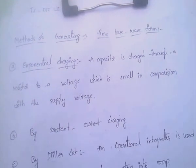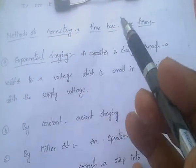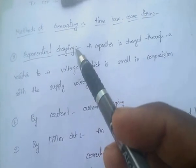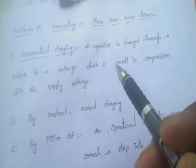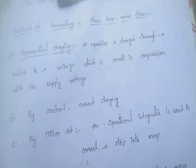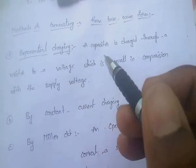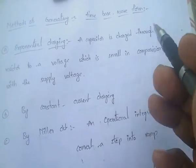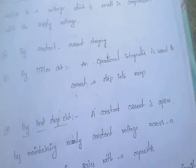Methods of generating a time-based waveform: The first method is exponential charging, in which a capacitor is charged through a resistor to a voltage which is very small in comparison with the supply voltage. The second method is by using constant current charging.